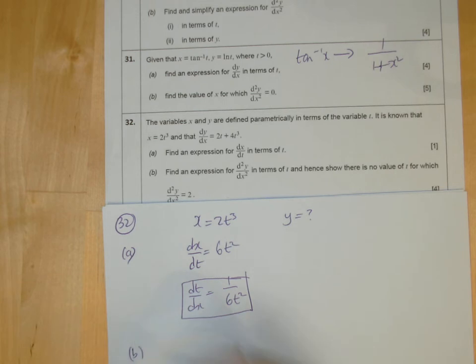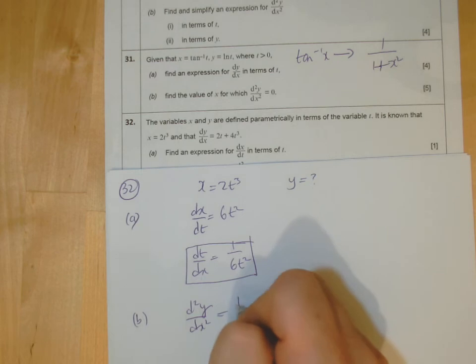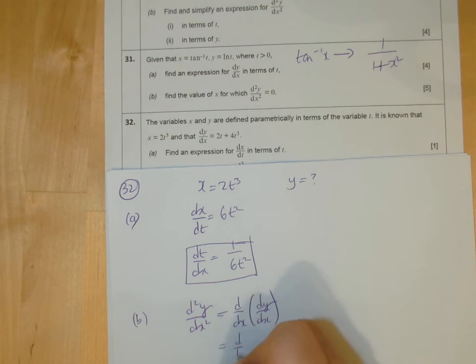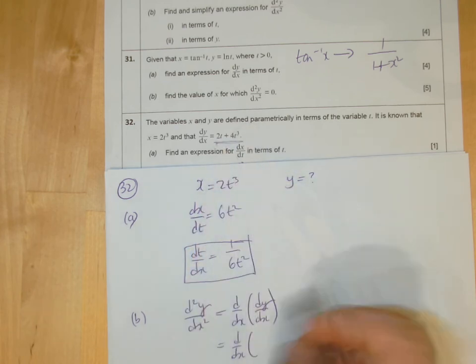We're looking at our part b. Part b says find an expression for d2y by dx squared. So d2y by dx squared. Well, that will be, don't forget, the derivative of dy dx, as we've seen before. And of course, dy dx is given to us in the question. They actually tell us what this is. It's a strange question. Usually you've got to work it out.